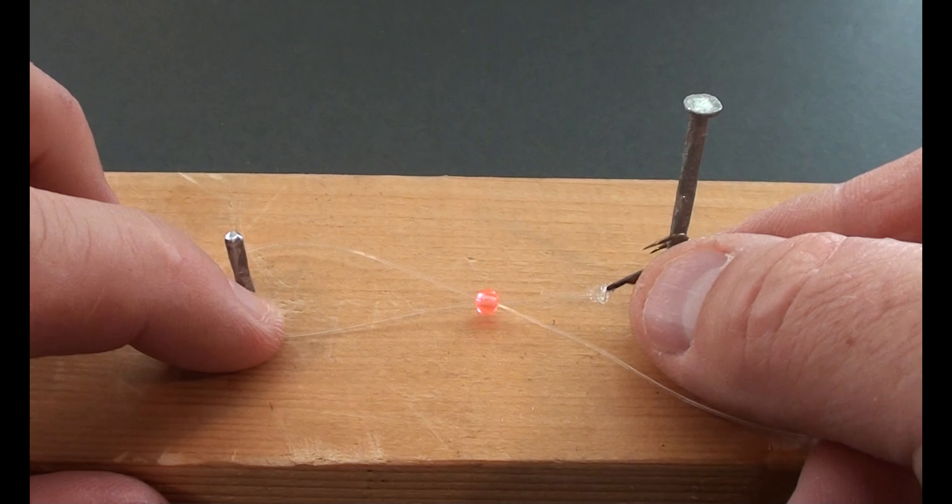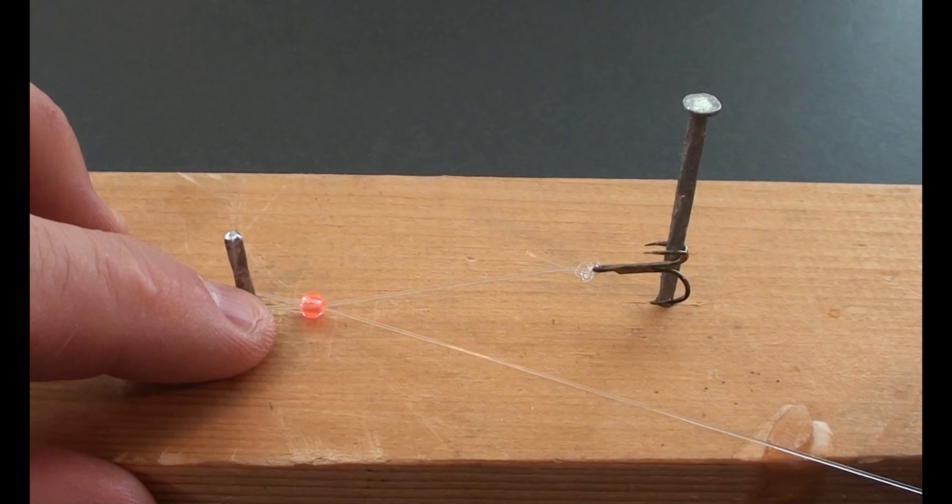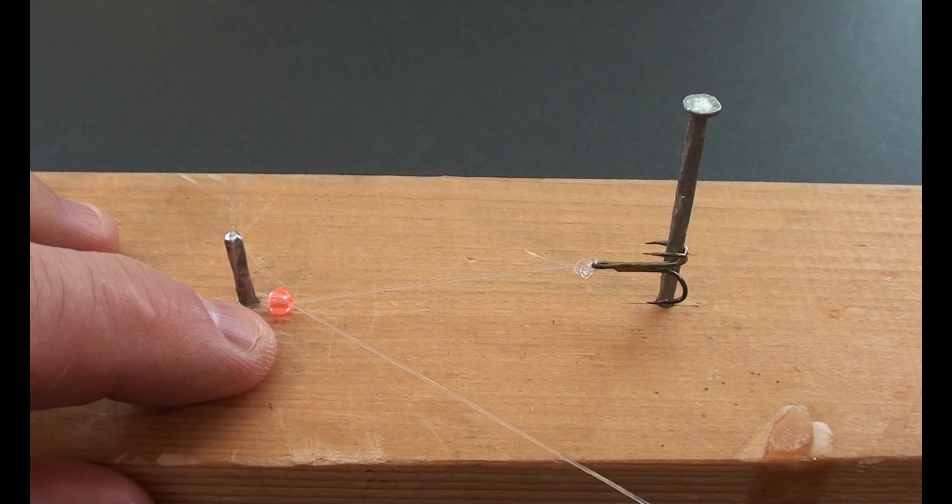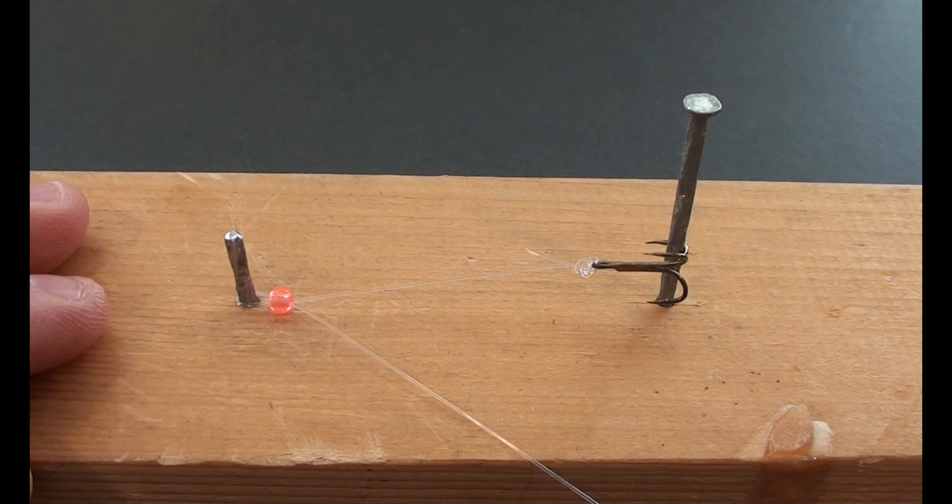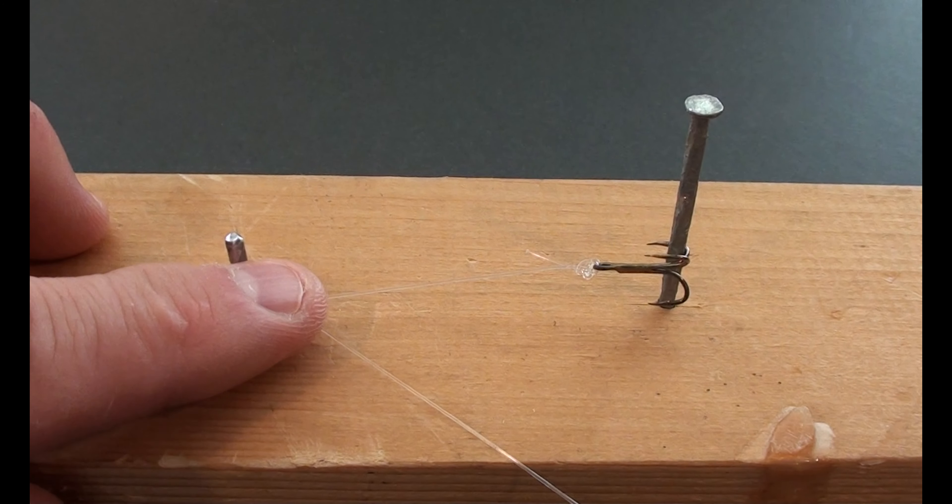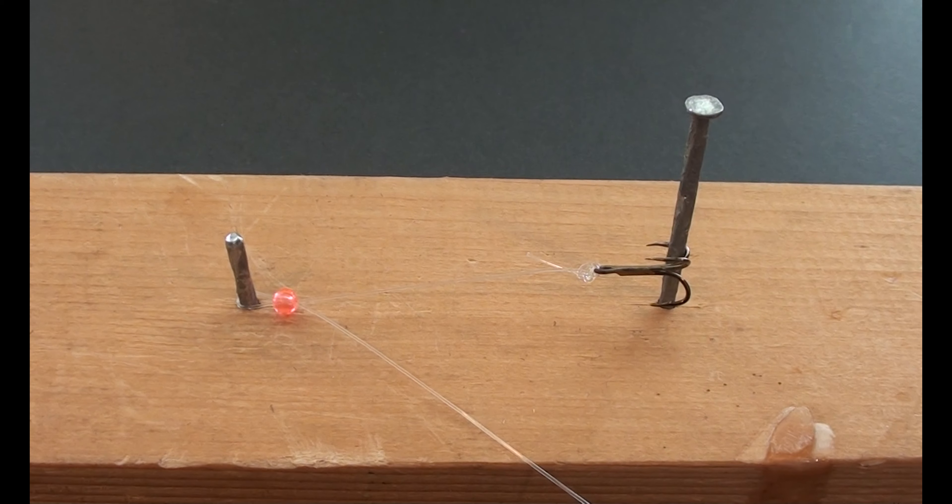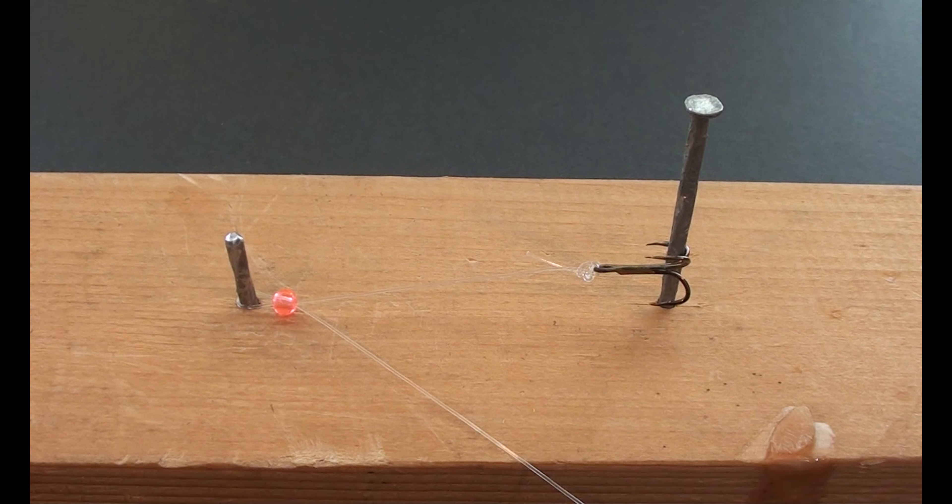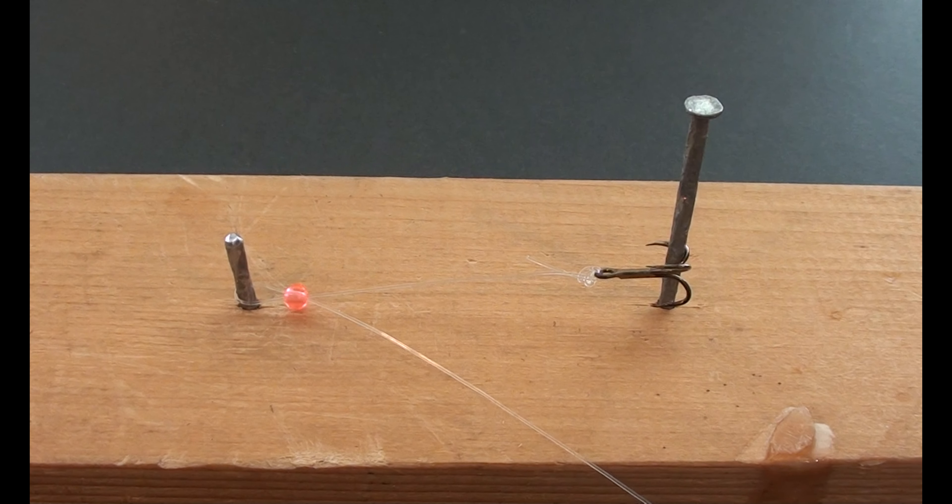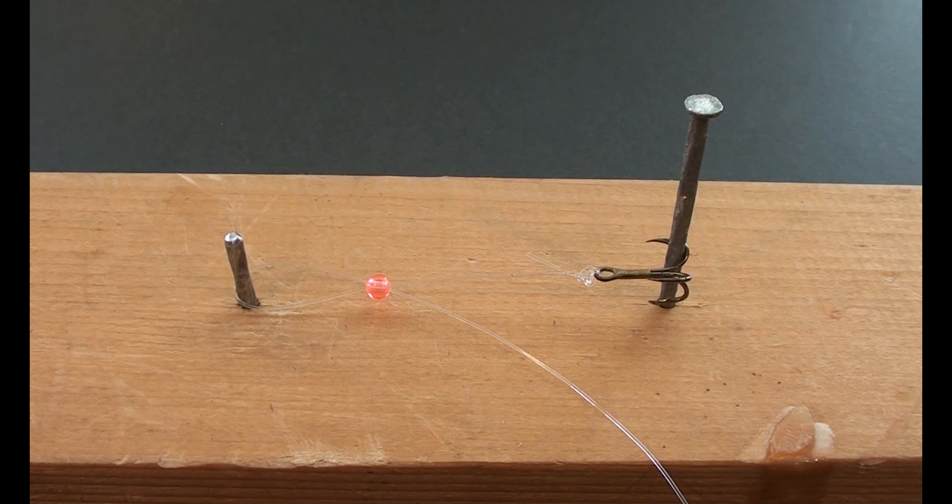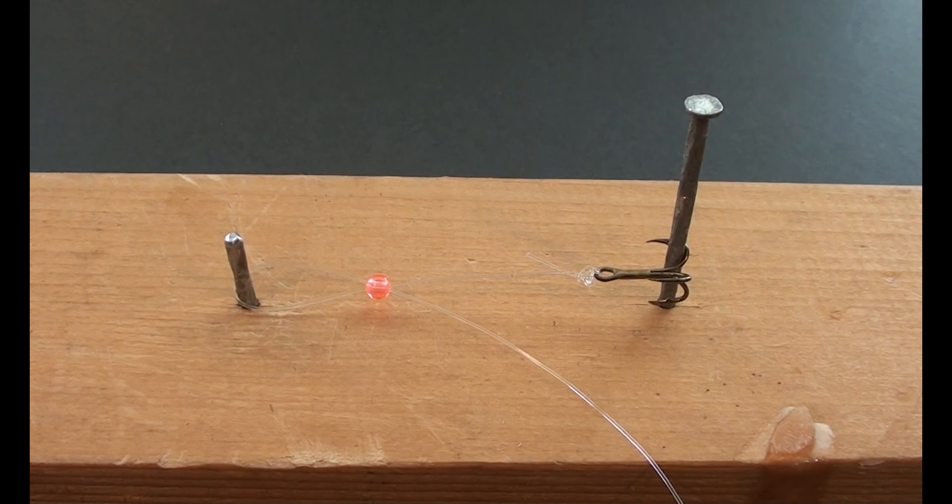Next we're going to attach the stinger hook to the jig. We're going to place the hook around the right side nail and then the loop that we formed through the bead around the nail on the left. And then we're going to take that tag end and pull it tight, sort of cinch that bead down fairly close to the nail. It doesn't have to be right on there. The beauty of this rig is that the lead going to the hook will always be able to slide through the bead.